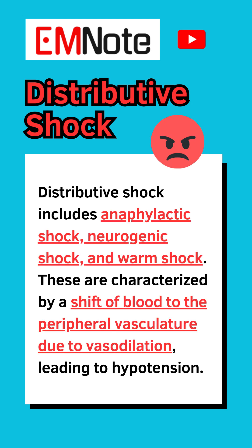Distributive shock includes anaphylactic shock, neurogenic shock, and warm shock. These are characterized by a shift of blood to the peripheral vasculature due to vasodilation.